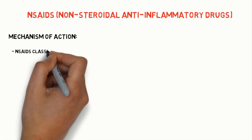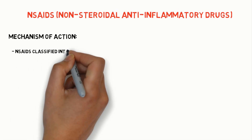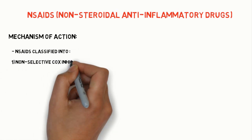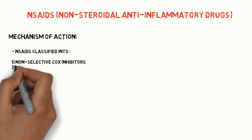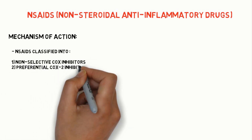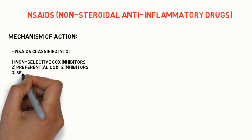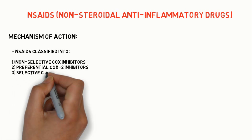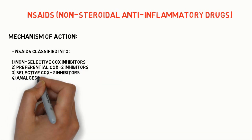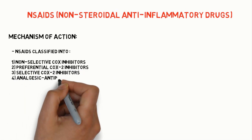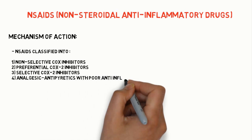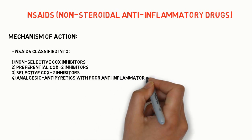We all know that NSAIDs are classified into four groups. First is non-selective COX inhibitor. Second is preferential COX II inhibitor. Third is selective COX II inhibitor. Fourth is analgesic antipyretic with poor anti-inflammatory action.